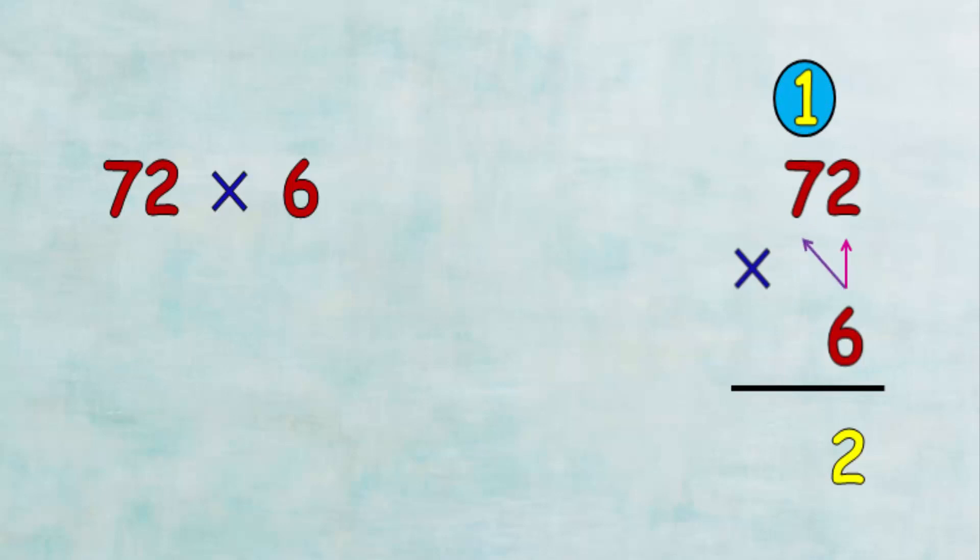And multiply 6 by 7, which equals 42. Don't forget to add 1 to 42, so we will have 43.